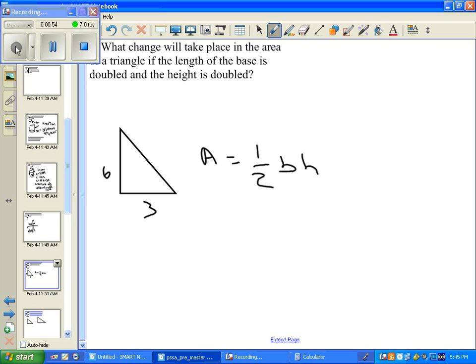Here we have base times height. We have b equals 3 and h equals 6, so the area equals one-half times six times three. That's eighteen, and one-half of eighteen equals nine.